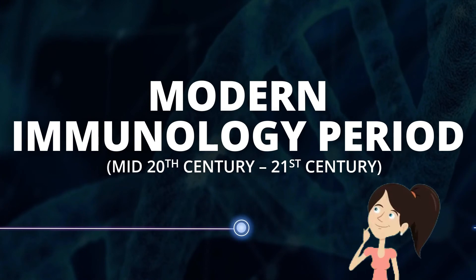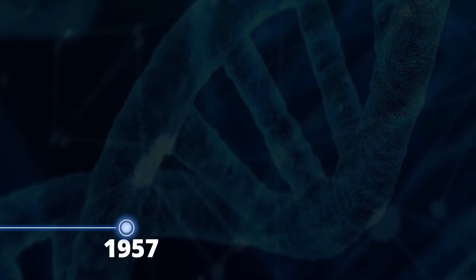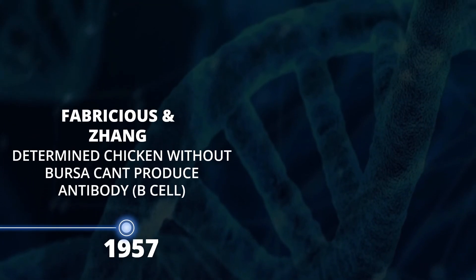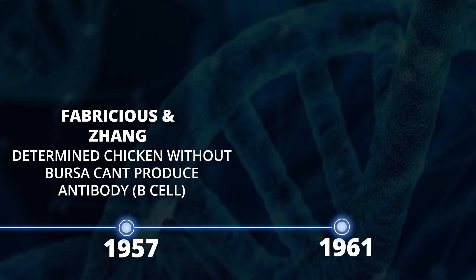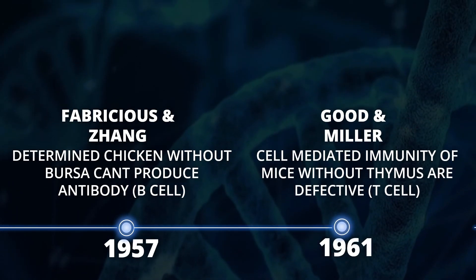In the modern immunology period — the middle of the 20th century to the 21st century — the focus turned to the study of the immune system. In 1957, Glick, Fabricius, and Chang Guangzang discovered that the bursa is the important organ that produces B cells in chickens. In 1961, Good and Miller discovered cell-mediated immunity in newborn mice — thymuses taken away resulted in defective T cells, demonstrating that the thymus is an important organ that helps T cells become processed, mature, and immunocompetent.